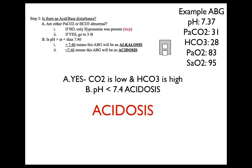Step three: is there an acid-base disturbance? Are either the CO2 or bicarb abnormal? In this example, yes. The CO2 is low at 31 because it's less than 35, and the bicarb is high at 28 because it's greater than 26. Is the pH greater than or less than 7.4? Our pH is less than 7.4 because it's 7.37. This indicates an acidosis. We now know that this example ABG is an example of acidosis.